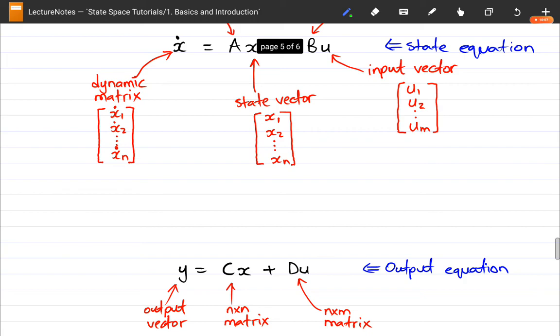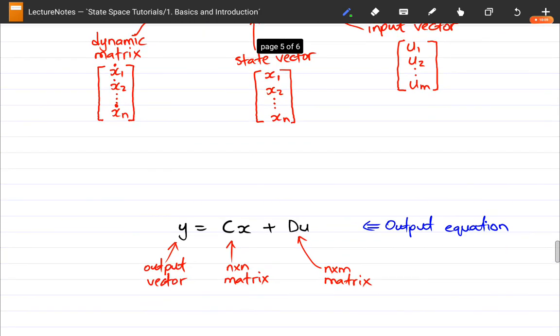And now we've talked about the state equation, we can talk about the output equation. The output equation links the output vector with the input vector and our state vector. So this is very important. I think the most important thing here you should notice is that there is a direct relationship between input and output, and also the state variables.